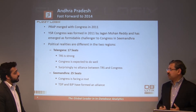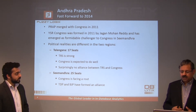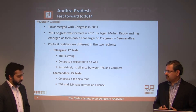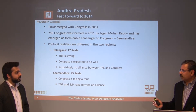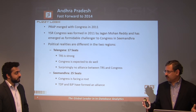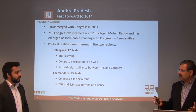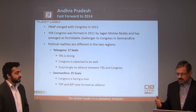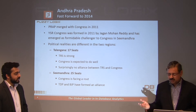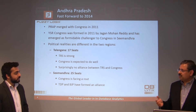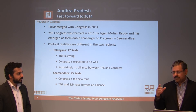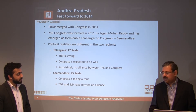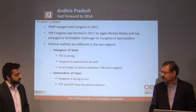The Praja Rajyam party actually merged with the Congress in 2011. Congress already had 39% votes, and the Praja Rajyam party got 16% votes. If you add them up, that's more than 50% votes — a combined formidable force in Andhra Pradesh. They would have been a dominant entity.